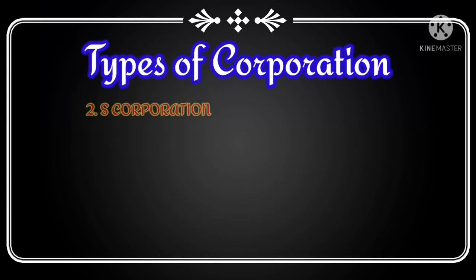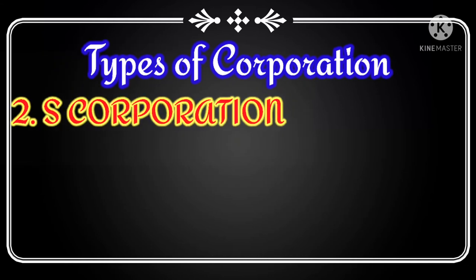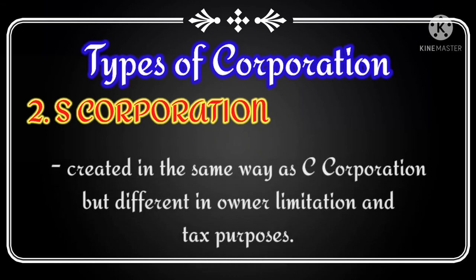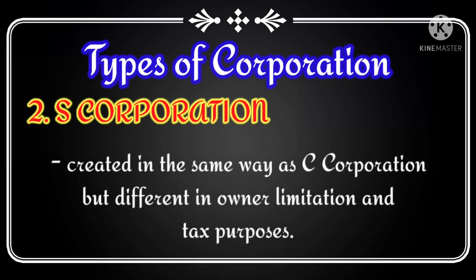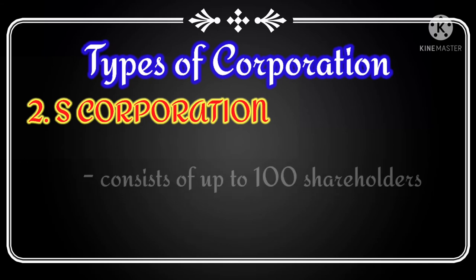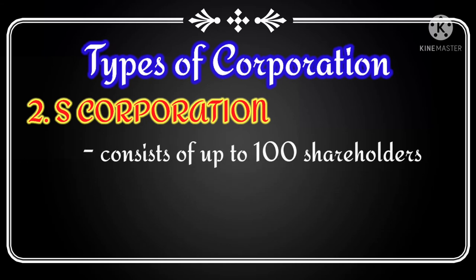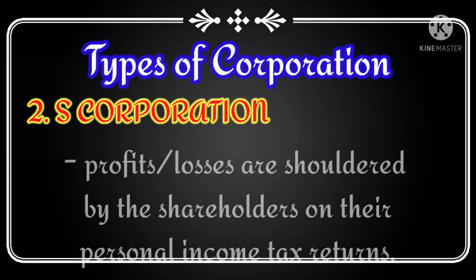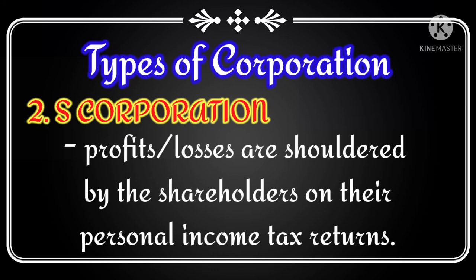The second type is S-Corporation. An S-Corporation is created in the same way as a C-Corporation, but it is different in owner limitation and tax purposes. An S-Corporation consists of up to 100 shareholders and is not taxed as a separate entity. Instead, the profits or losses are shouldered by the shareholders on their personal income tax returns.